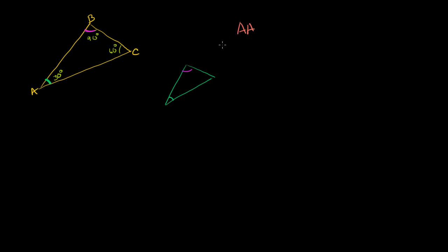So this will be the first of our similarity postulates — we call it angle-angle. If you can show that two corresponding angles are congruent, then we're dealing with similar triangles. For example, if this is 30 degrees and this triangle has 90 degrees, we know it's similar to the other one. You can quickly get the third angle — it's 60 degrees — so all three angles are the same.